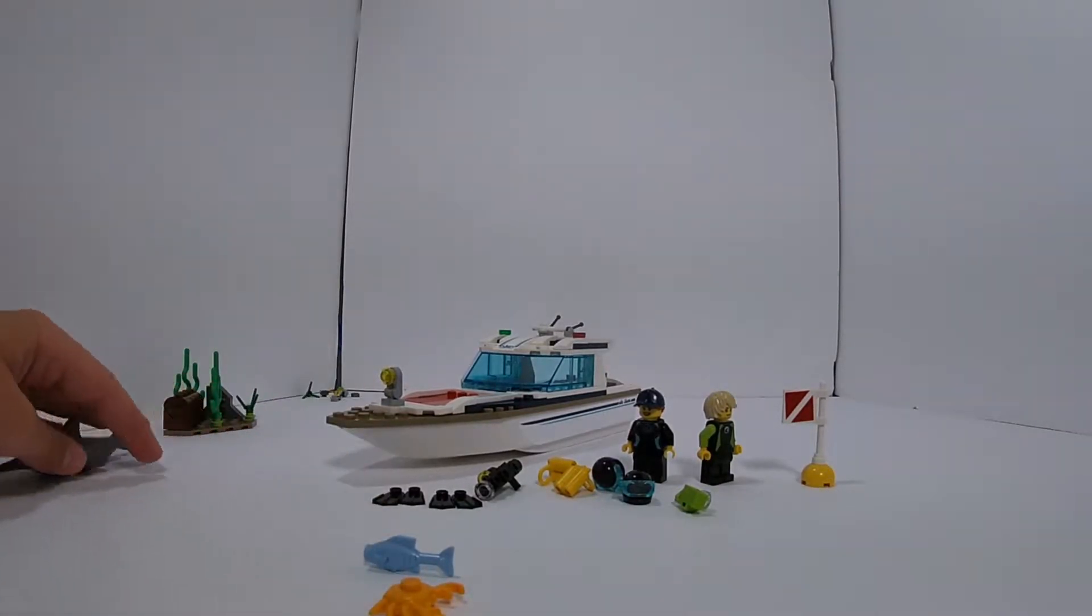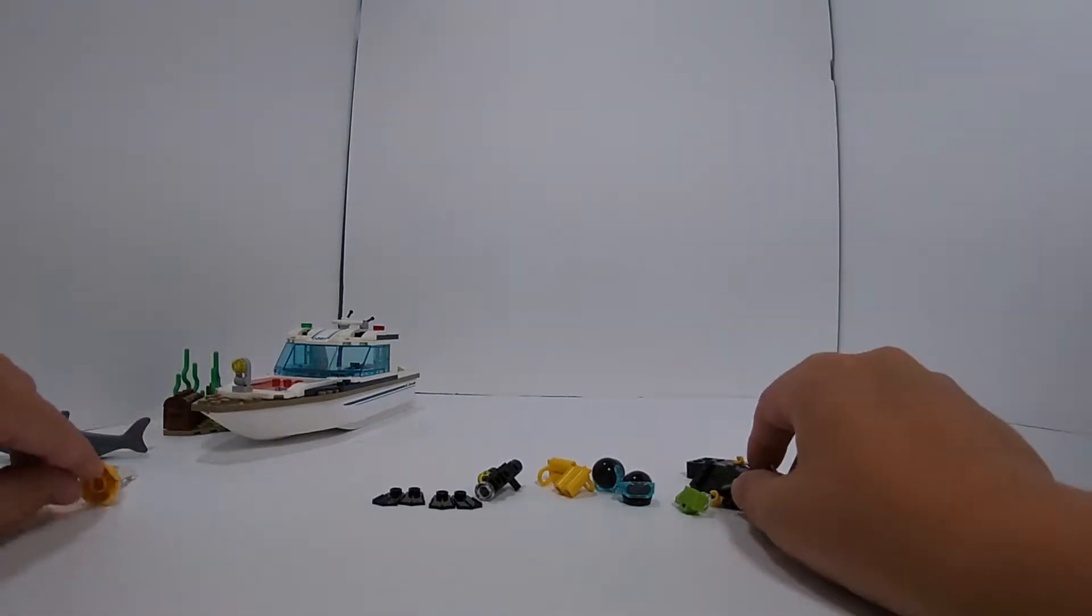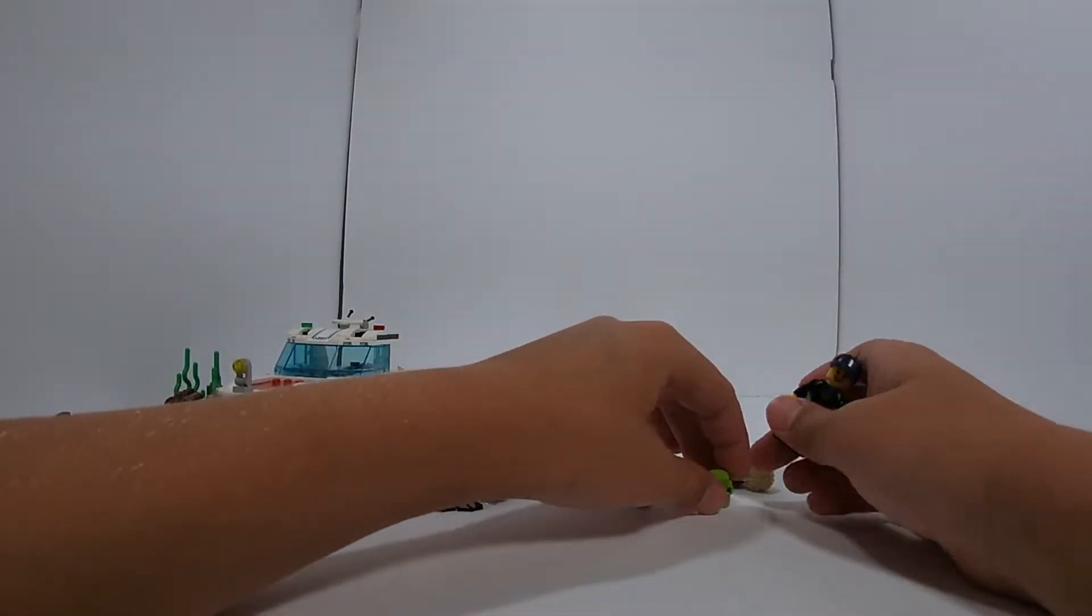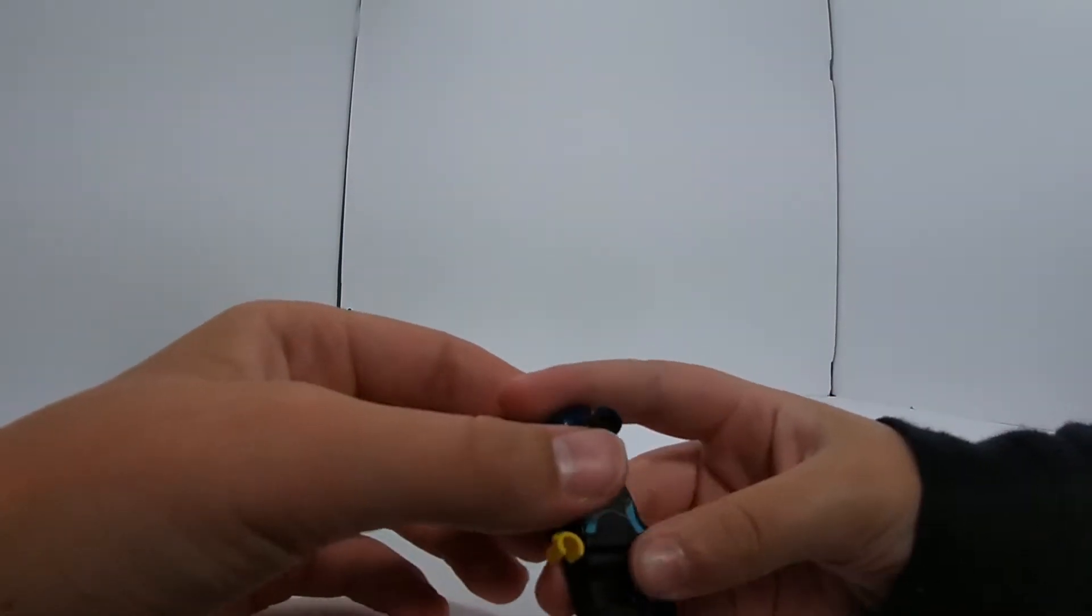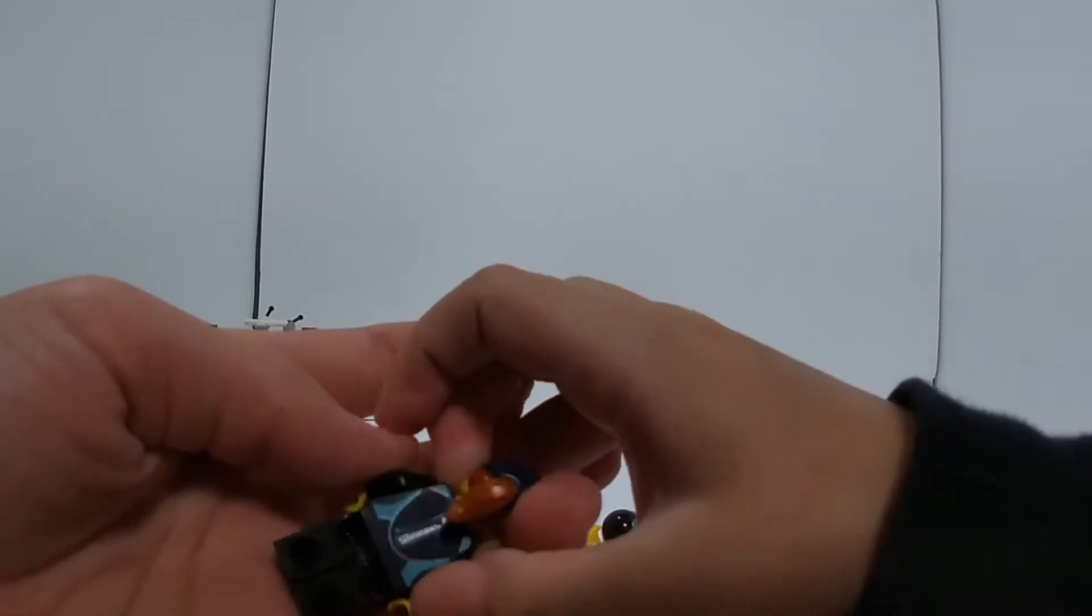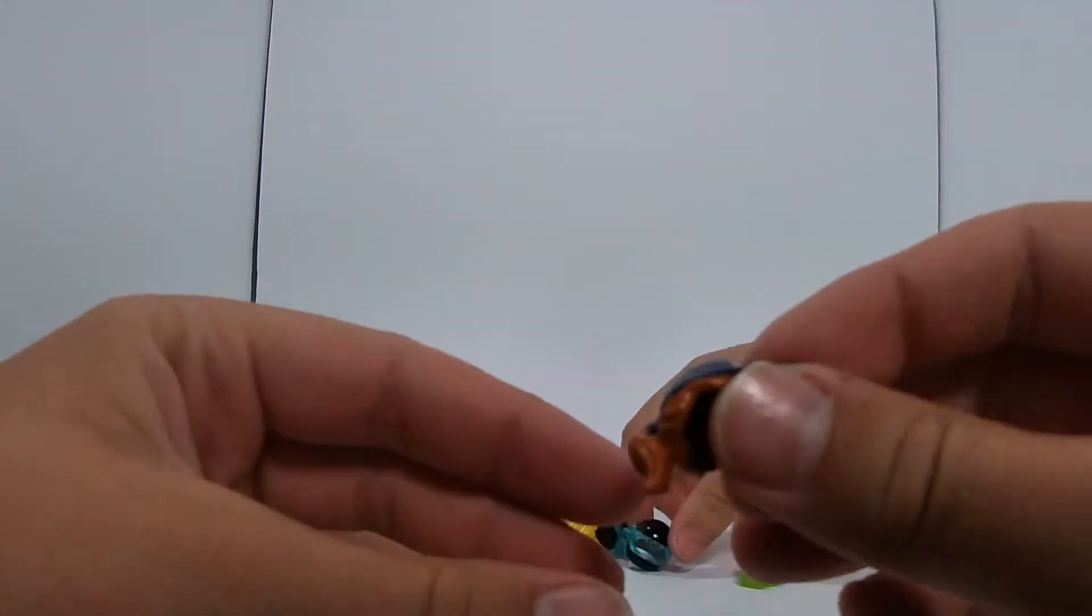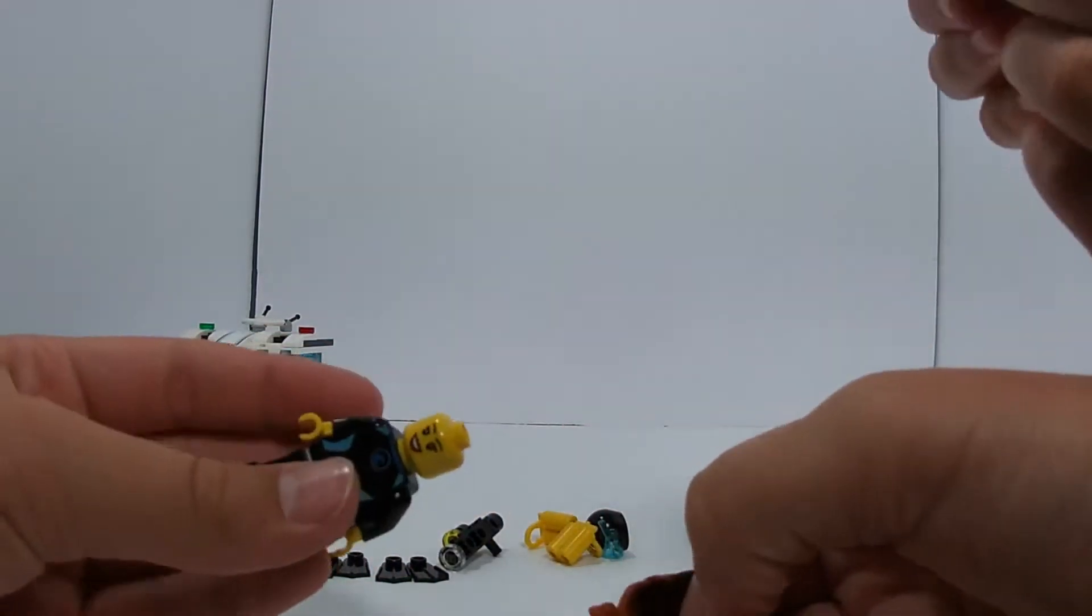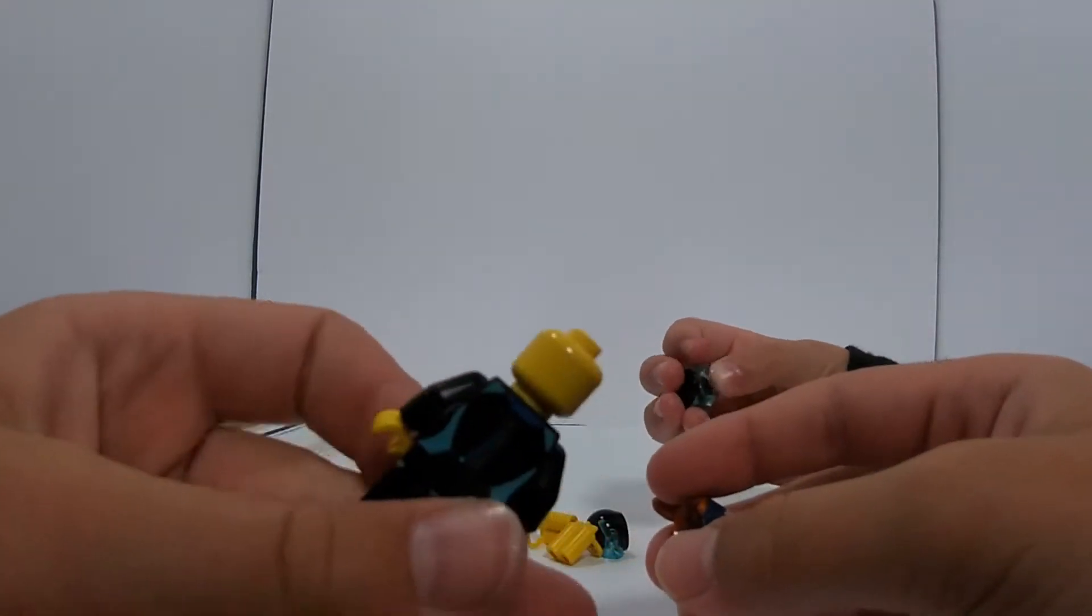Let's start off with the minifigs real quick. Let's move everything, minifigs and their stuff, the yacht and everything else out of the way. Minifigs and their accessories. So the female here, she is wearing a blue wetsuit with a hat and hair mold piece on. And she also has a scuba. And then no secondary face for her.